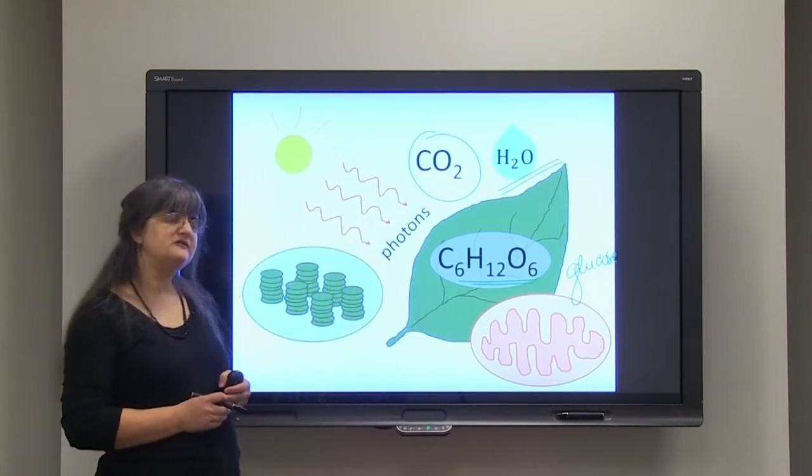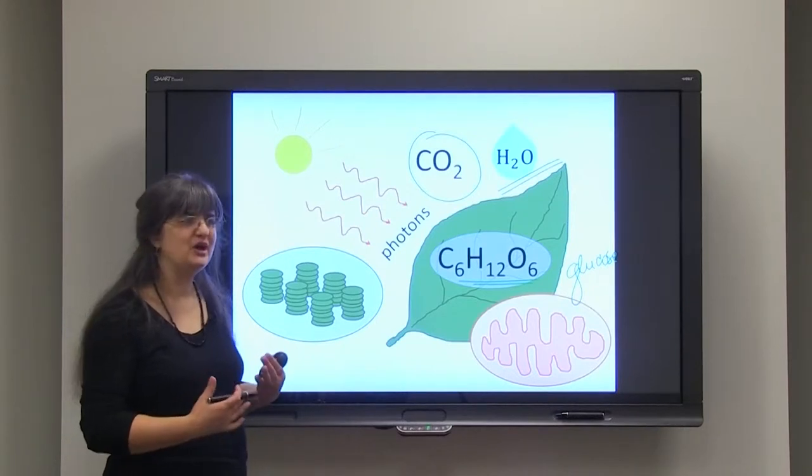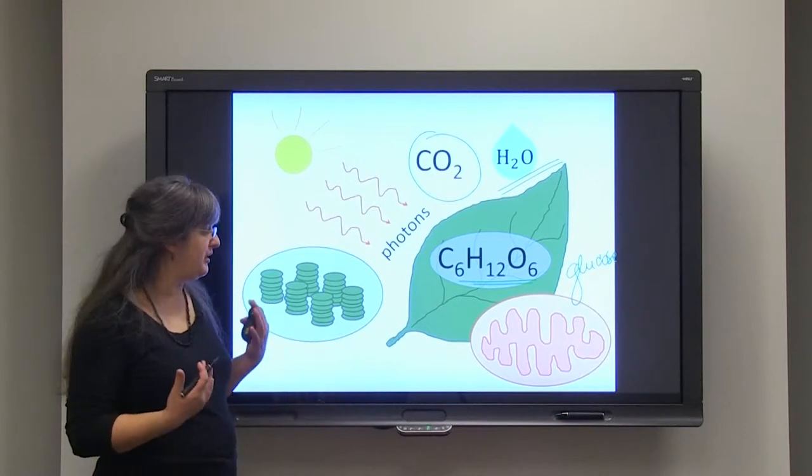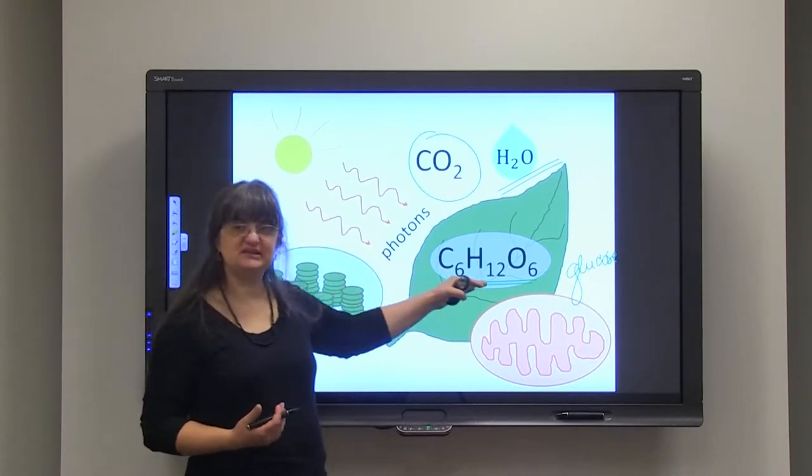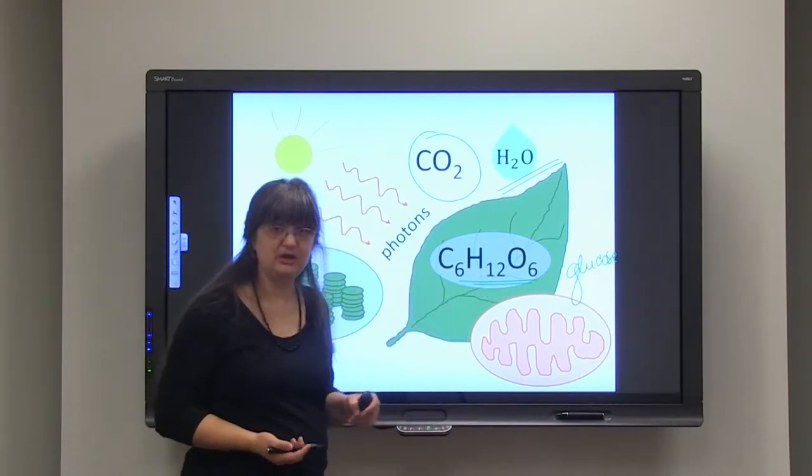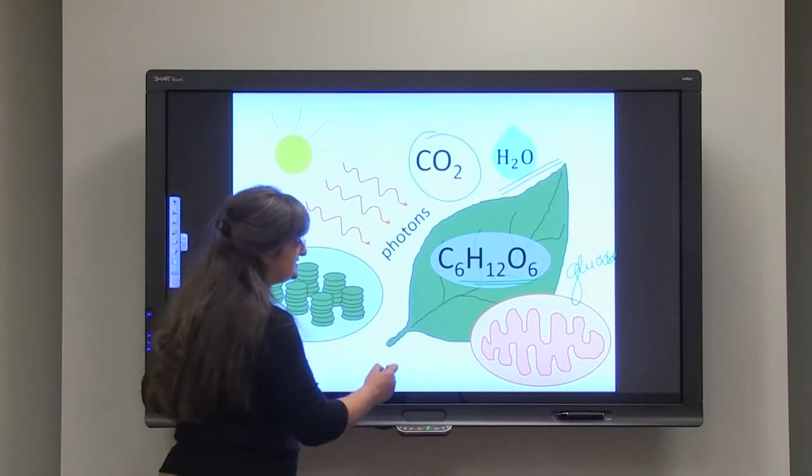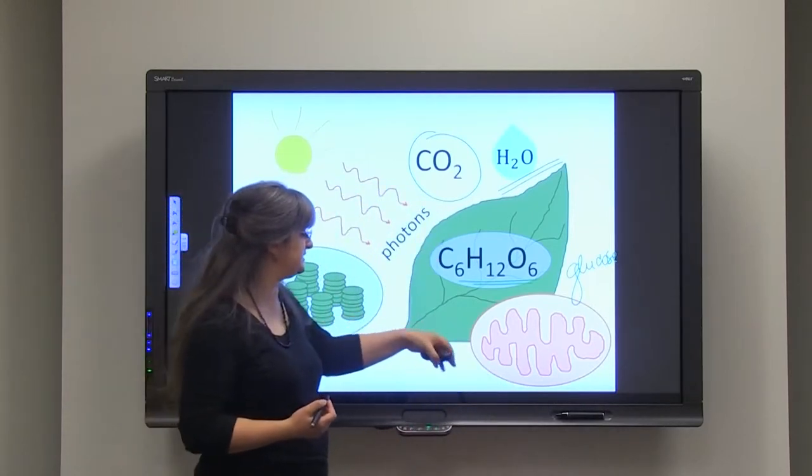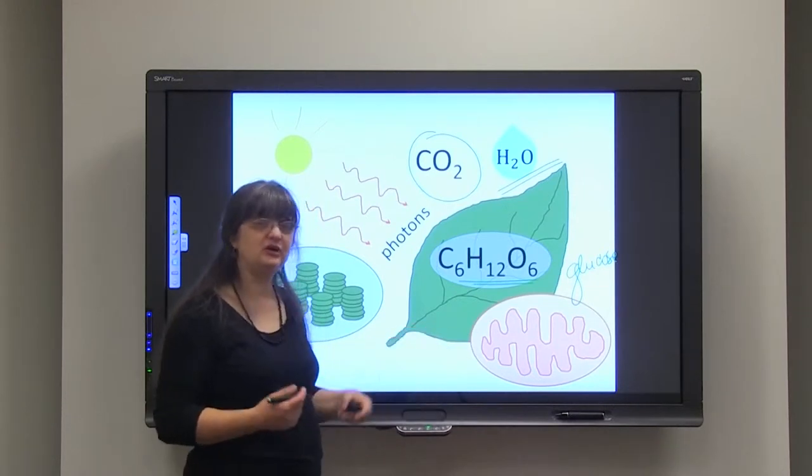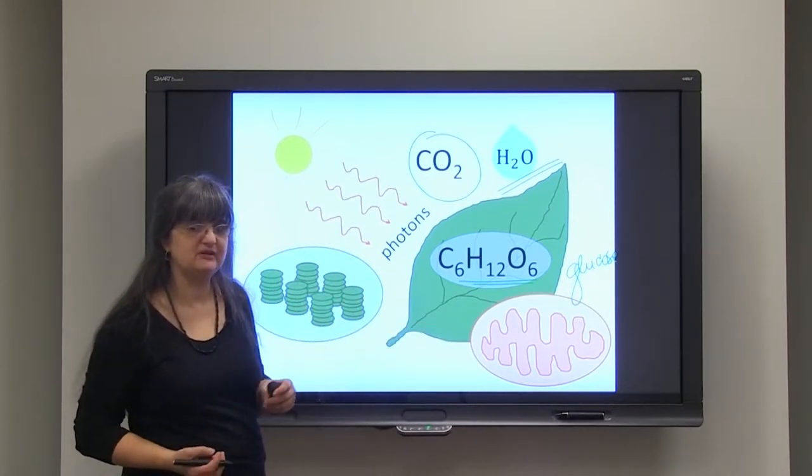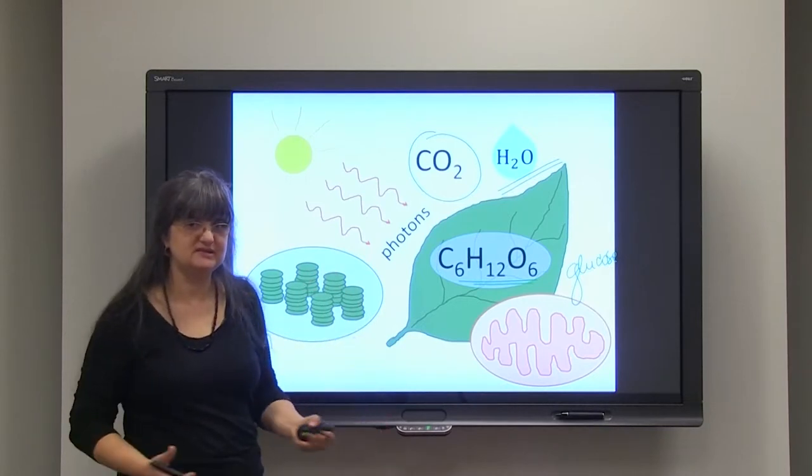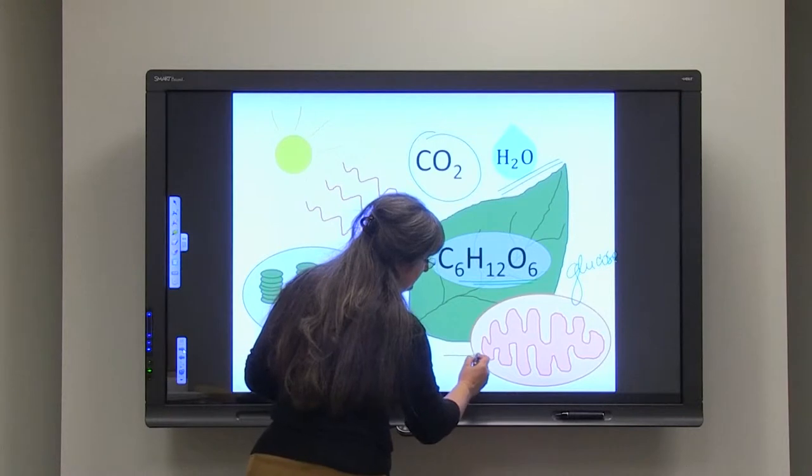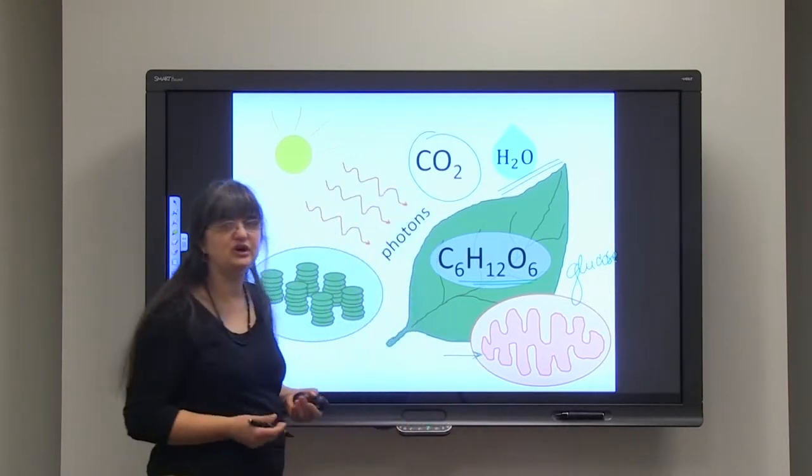But we often forget that plants are also organisms that need energy. So, part of that glucose that is built in the plants is utilized by the same cells, by the same organelles, to build the energy that is needed for all the living processes that are happening. For growth, for building materials and so forth. And that energy is utilized from mitochondria.